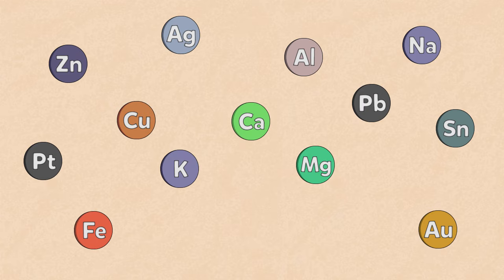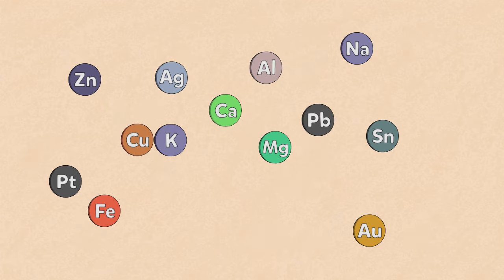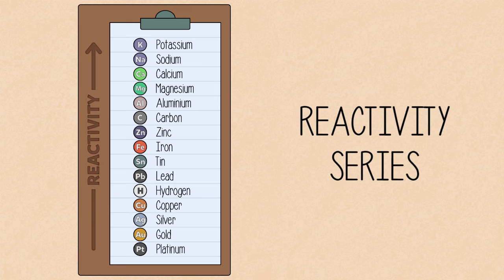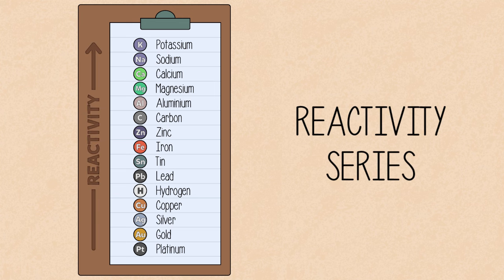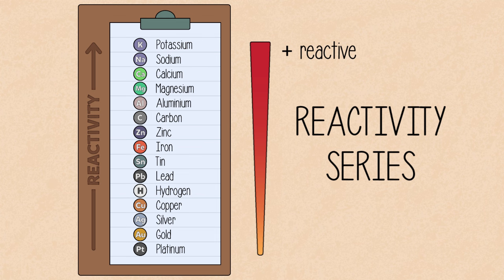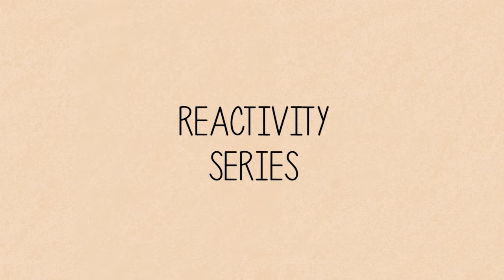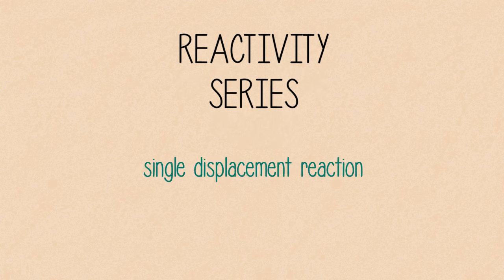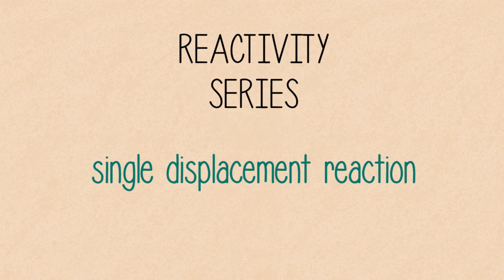We can actually organize these metals according to their reactivity. This arrangement is known as the reactivity series. The most reactive metals are at the top, and the least reactive at the bottom. We can use this series to predict whether or not a single displacement reaction will occur.